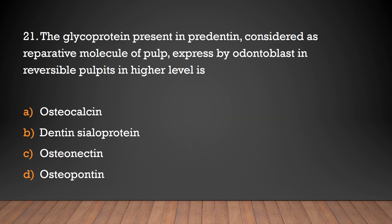The glycoprotein present in pre-dentine, considered as a reparative molecule of pulp expressed by odontoblasts in reversible pulpitis at a higher level, is: osteocalcin, dentine xyloprotein, osteonectin, or osteopondin?